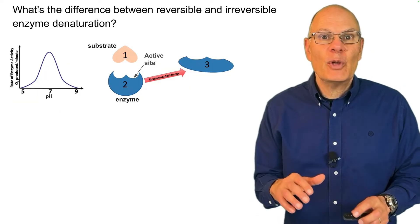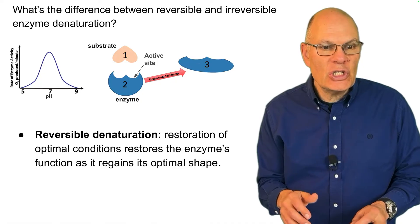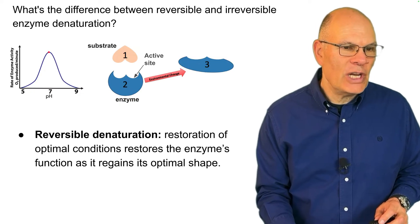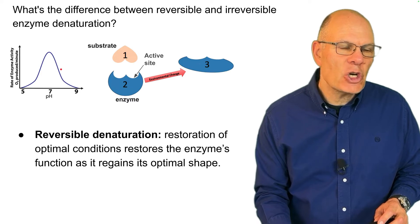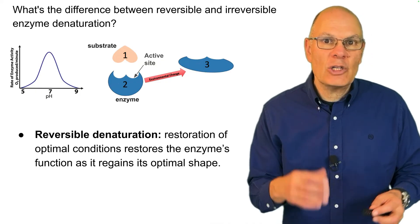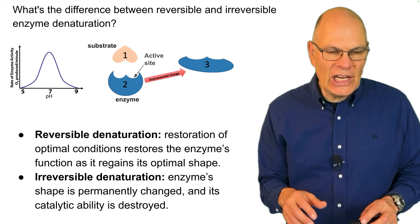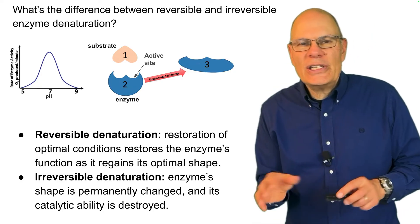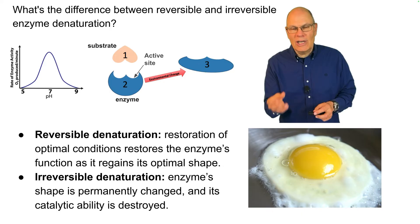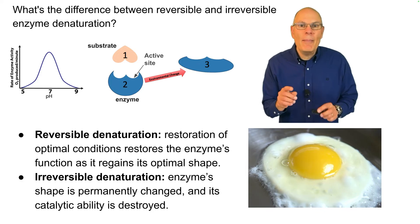What's the difference between reversible and irreversible enzyme denaturation? Reversible denaturation is where the restoration of optimal conditions restores the enzyme's function as it regains its optimal shape. For example, if an enzyme has an optimal pH of 7 and you shift it slightly, the enzyme starts to denature — but if you restore the pH, the enzyme shape may return to its previous form. Irreversible denaturation is where the enzyme shape is permanently changed and its catalytic ability is destroyed. Think of cooking an egg: the egg white goes from clear to solid and never goes back — that's irreversible denaturation of a protein.